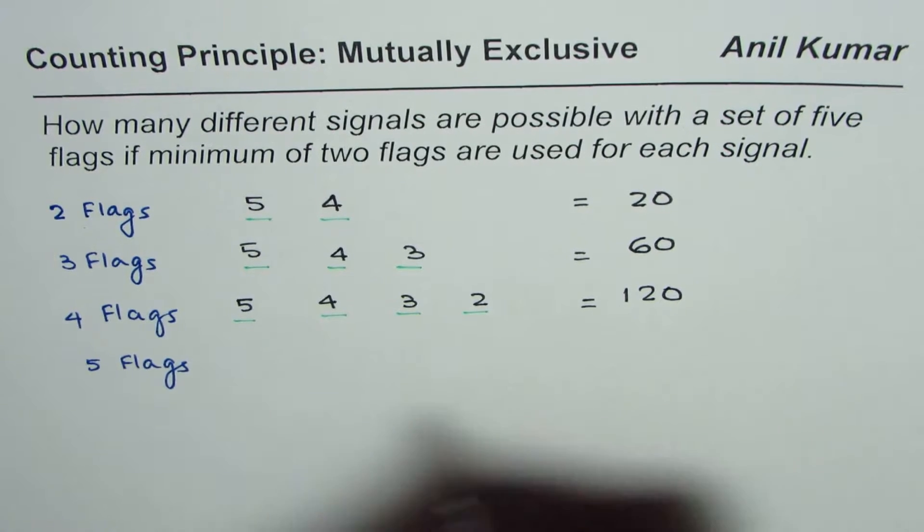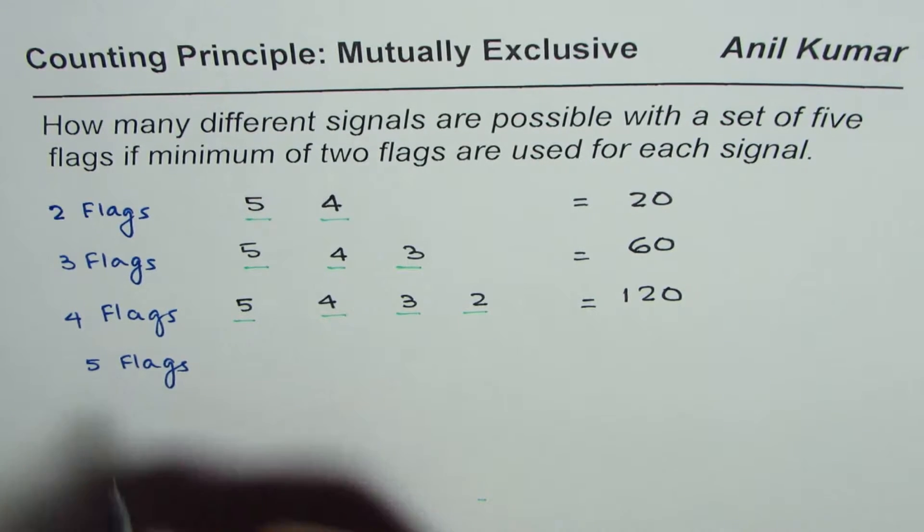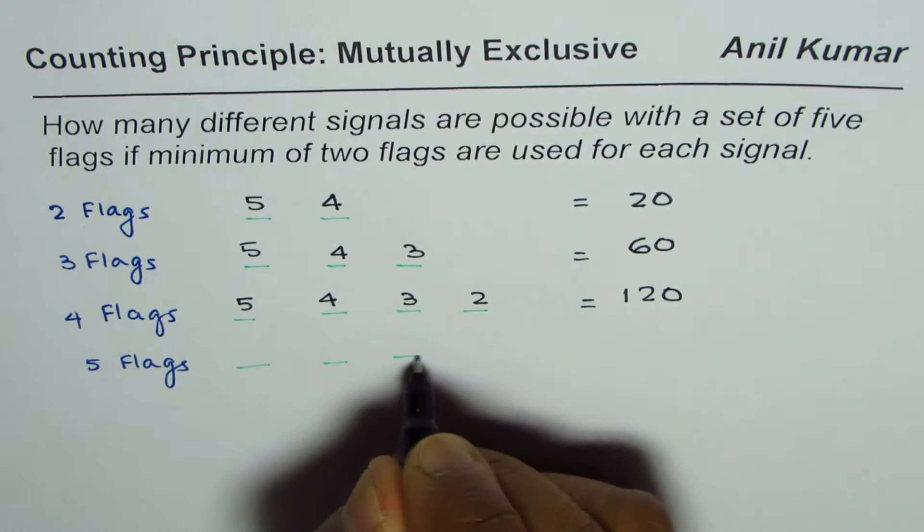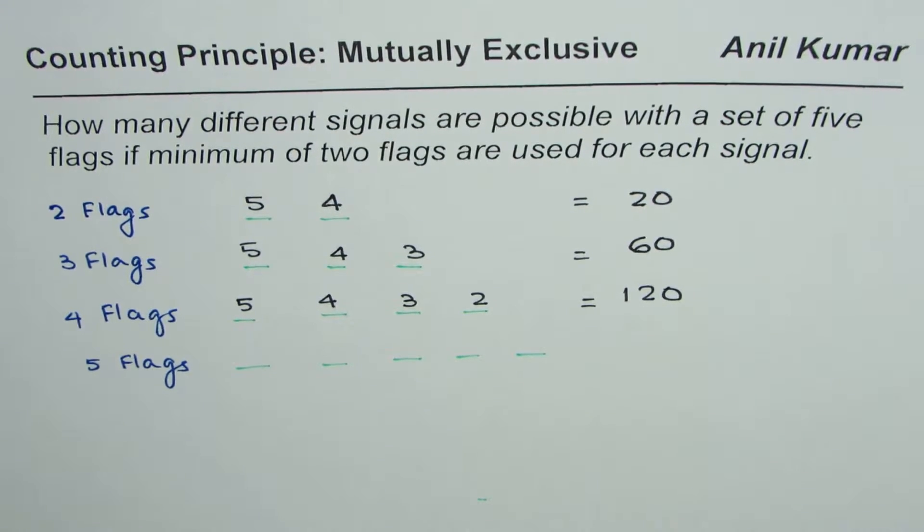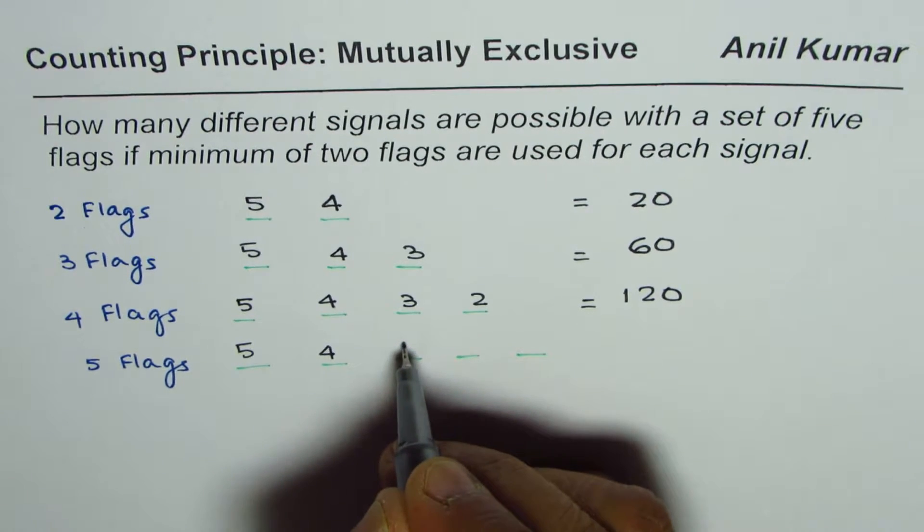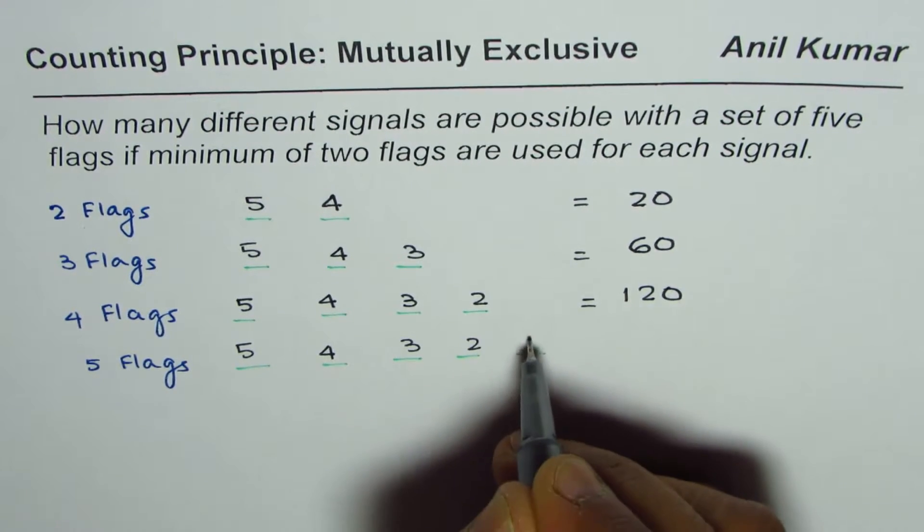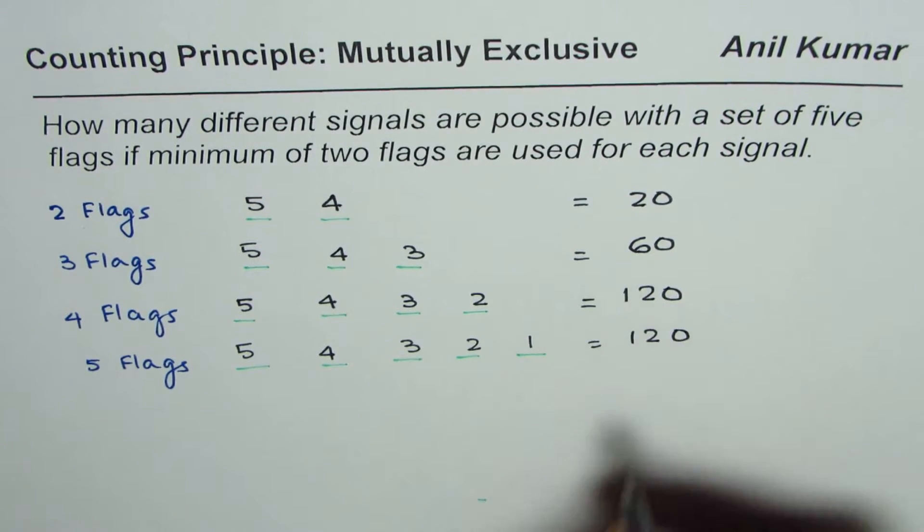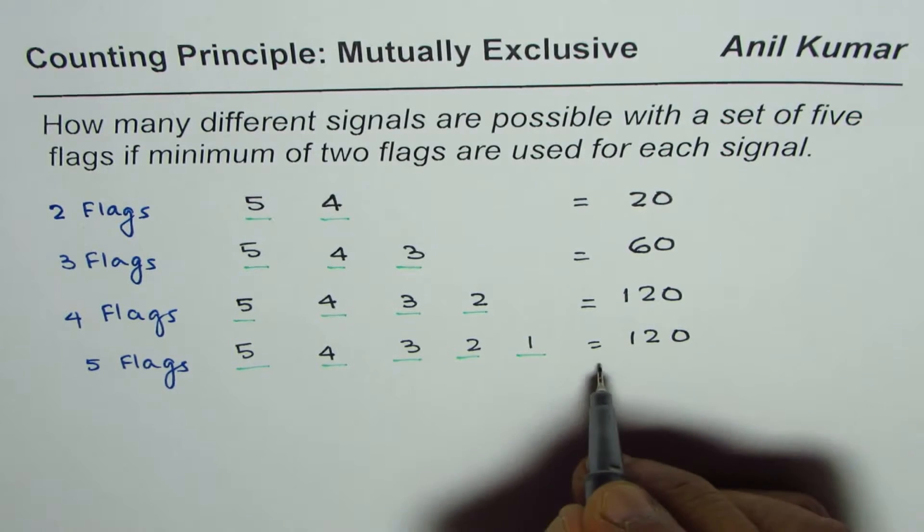Now if you are using all the five flags, in that case the number of options will be five factorial, or five times four times three times two times one. We get here also 120 as the total number of options or permutations.